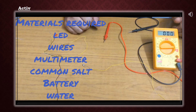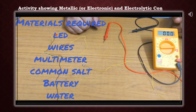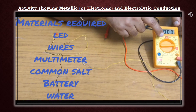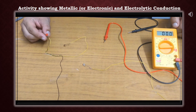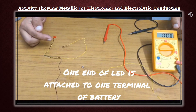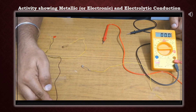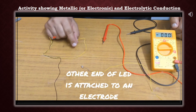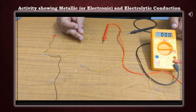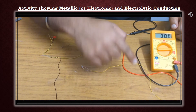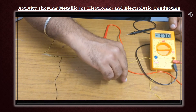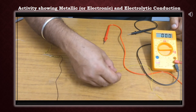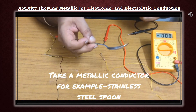Let's perform an activity showing metallic or electronic and electrolytic conduction. In this activity we use a multimeter to show how much current is flowing through the circuit. One LED is used whose one end is attached to the terminal of the battery and the other end to an electrode — we use a safety pin for that. The second terminal of the battery is attached to another electrode. To show electronic conduction, we use a metallic spoon.